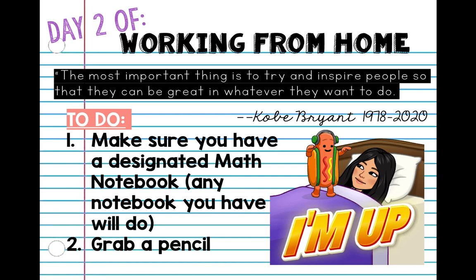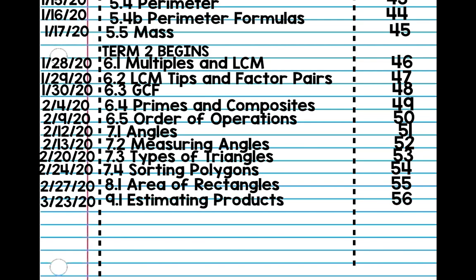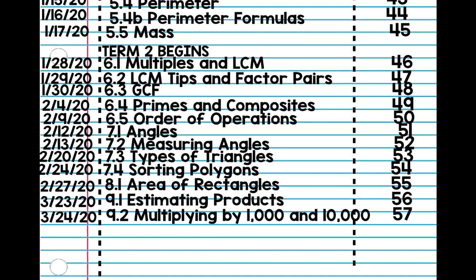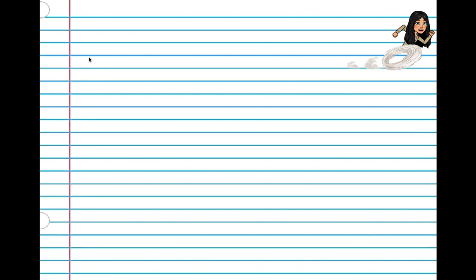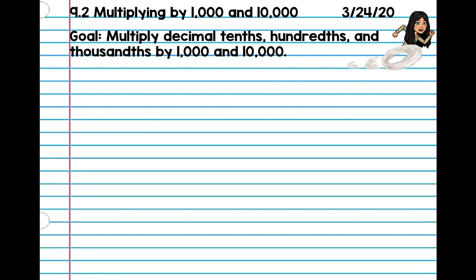It is important to inspire people. Alright, so make sure you guys have your notebook and your pencil, and we're just going to go right to our lesson. So you don't have to copy this, but today make sure you write your title in your notes because you will be taking pictures of all your work and sending it to me on Friday in a Word document. Okay, so let's begin. 9.2 multiplying by 1,000 and 10,000. Our goal today is to multiply decimal tenths, hundredths, and thousandths by 1,000 and 10,000.